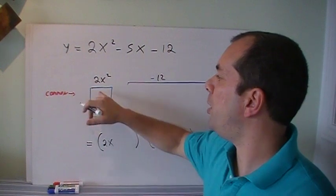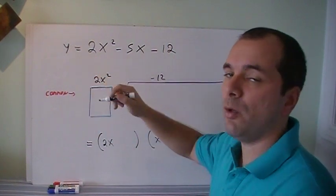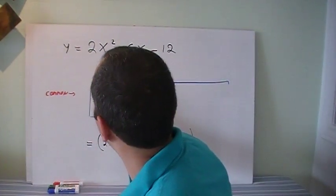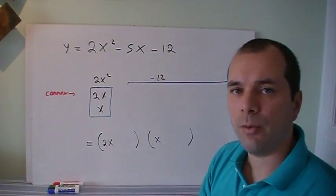We're going to draw a little box, and we're going to figure out the two numbers that multiply to 2x squared, which in this case is only one choice, and that's 2x and 1x.